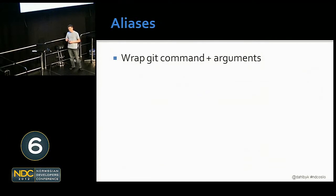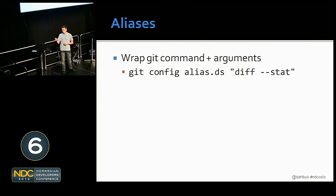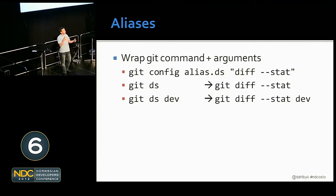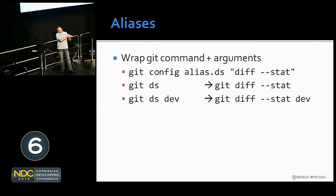The most interesting config stuff happens with your aliases. Aliases always live in git config. The simple case is just to wrap a command and its arguments. So if I make an alias called `ds` as a shortcut for `diff --stat` — that shows all the files and a summary of how much has changed — then when I do `git ds`, that translates into `git diff --stat`. If I add `git ds dev`, that shows a diff with stat for the dev branch. Basically anything you pass after the alias is tacked on to the end.